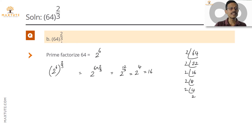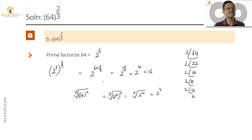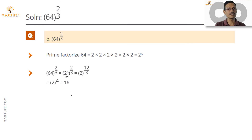Another way: the power 2/3 means a cube root squared. So cube root of 64² = cube root of (2^6)² = cube root of 2^12 = 2^4 = 16 — exactly the same result. To recap: 64 = 2^6, so 64^(2/3) = (2^6)^(2/3) = 2^(12/3) = 2^4 = 16. The rule used is (a^x)^y = a^(xy).